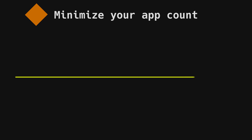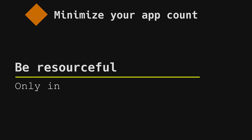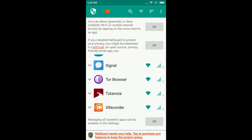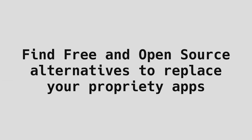Be minimalist. Do you really need every app on your phone? The more of them you have, the more exposed you are. Review and revoke permissions of apps that can work just fine without them. Use an application firewall to block their network access if they don't need it to function. Can you find a better, free, and open-source alternative that respects your privacy for your current apps?